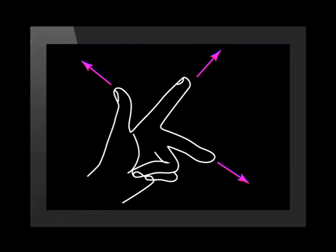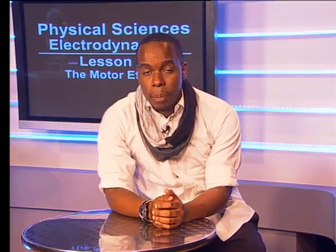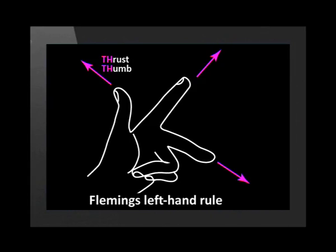That was great, but there was one problem — it took a long time to predict the direction that the wire would move. There must be an easier way. Luckily, scientists have found a way to make use of our left hand as well. Get your left hand ready. The thumb and first two fingers of the left hand are held at right angles to each other. Each one represents one part of the magnetic puzzle. My thumb represents the thrust. The first finger represents the field of the magnet from north to south. The second finger shows the direction of current in the conductor.